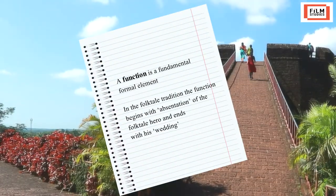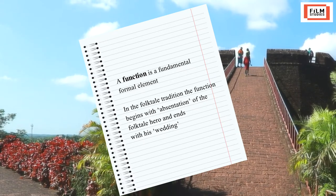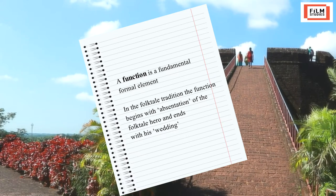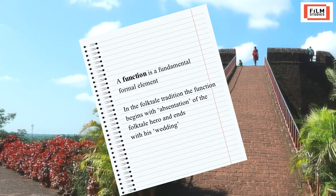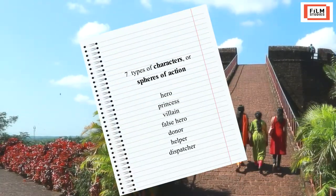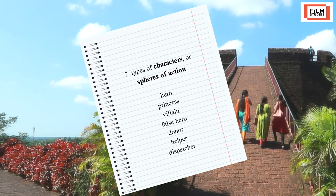In Proppian analysis, the structure of folk tales can be divided into 31 functions — a function being a fundamental formal element. In the folk tale tradition, the function begins with the absentation of the folk tale hero and ends with his wedding. The initial disappearance of the hero unsettles the status quo, and the final wedding brings back unity and settlement. Indictments against the hero, his liquidation, his transfiguration, and the recognition he receives are some other functions. Propp also discovers seven types of characters or spheres of action.